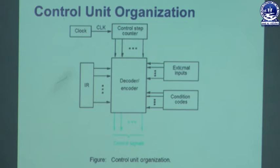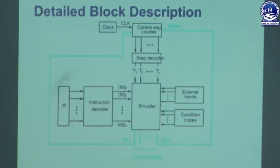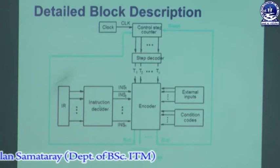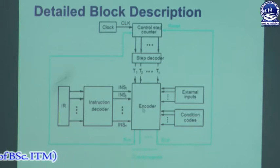These are outside signals or outside instructions of the program which we have executed in the processor, that is why we include them in the external inputs. This is the figure of control unit organization for hardware control, and this is the detailed block description. In this diagram, the decoder and encoder circuit is divided into two parts: one is the instruction decoder and another one is the encoder circuit.